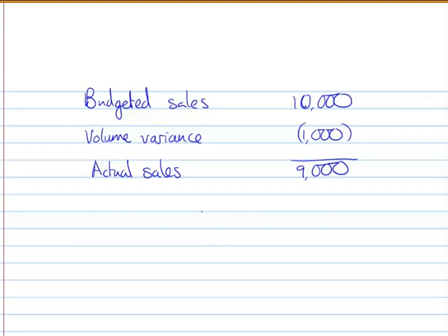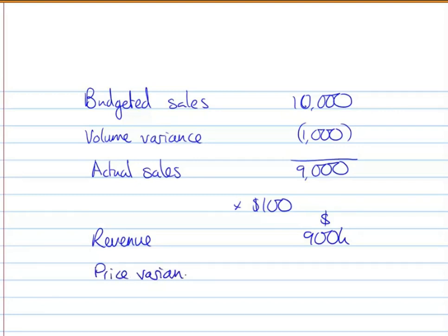If we were selling at the standard price of $100 each, that would give us a revenue figure for the actual volume at the standard price of $900,000. However, we know there was a price variance of $10,000 favourable, so that must give us our total actual revenue of $910,000.